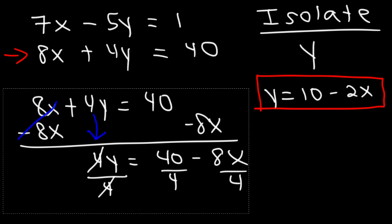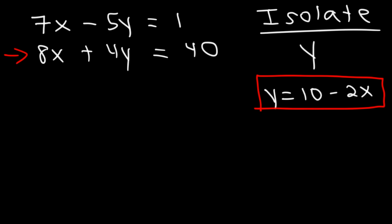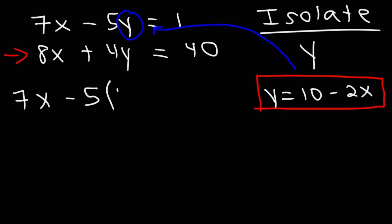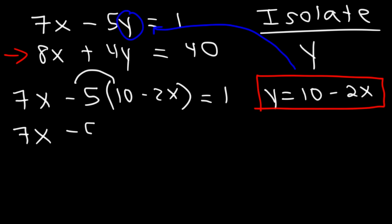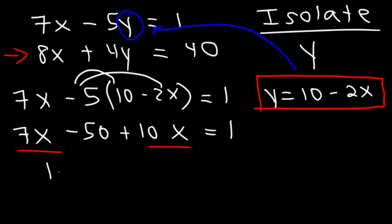Because we got that expression from the second equation, we plug it into the first equation. Replace y with 10 minus 2x: 7x minus 5 times (10 minus 2x) equals 1. Now distribute the negative 5: negative 5 times 10 is negative 50, and negative 5 times negative 2x is positive 10x. Combining like terms: 7x plus 10x is 17x.